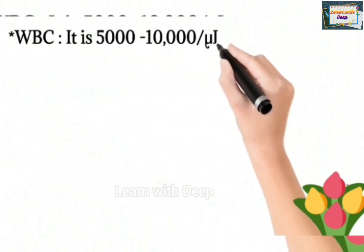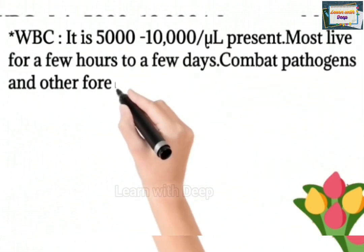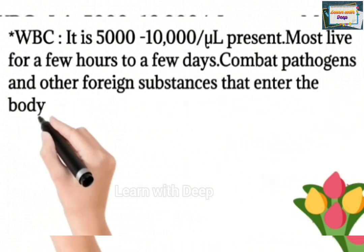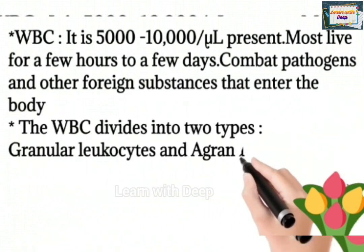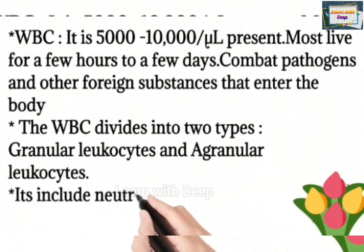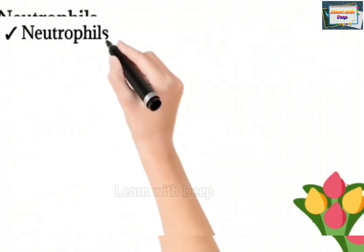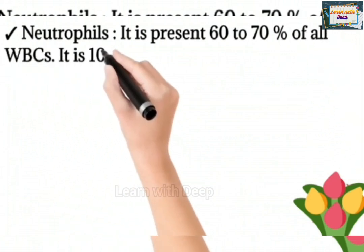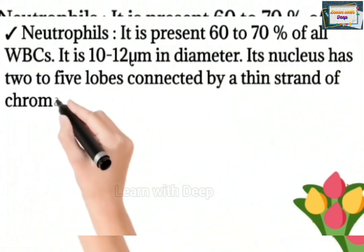WBCs number 5,000 to 10,000 per microliter. Most live for a few hours to a few days and combat pathogens and other foreign substances throughout the entire body. WBCs are divided into two types: granulocytes and agranulocytes. Granulocytes include neutrophils, eosinophils, and basophils.